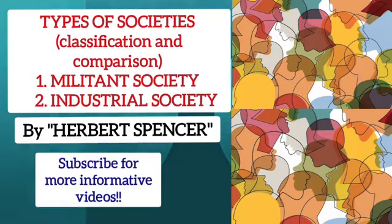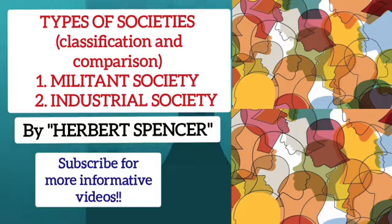Spencer wrote: 'All are slaves to those above and despots to those below.' The third characteristic of a militant society is rigid social classes. This rigid hierarchy of power necessarily involves a rigid grading of social statuses, giving rise to rigid social classes.